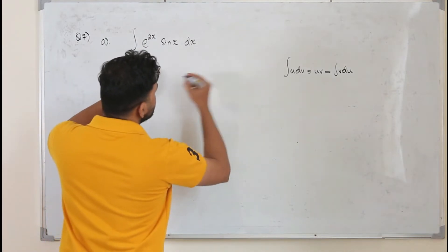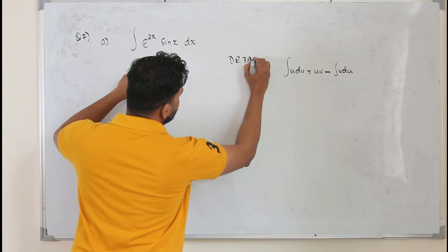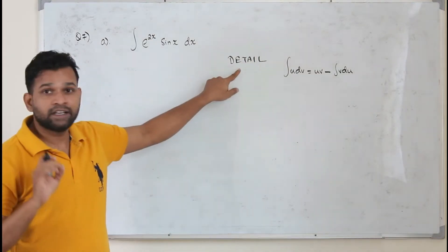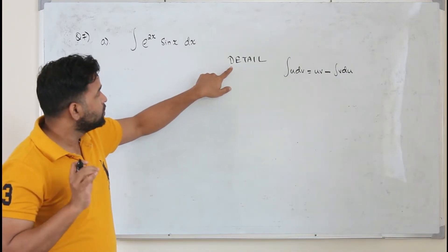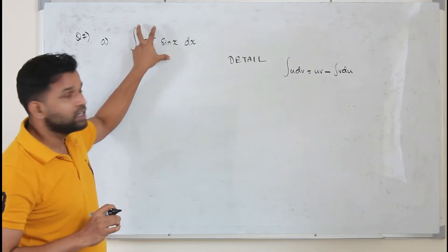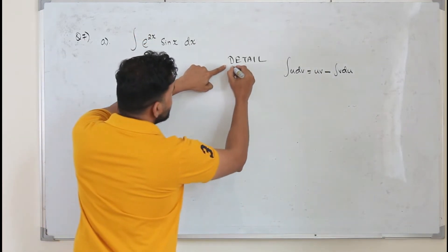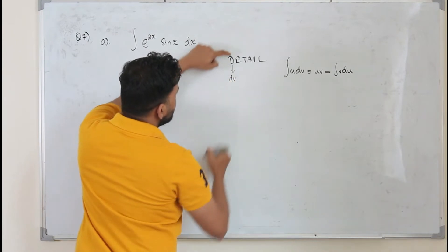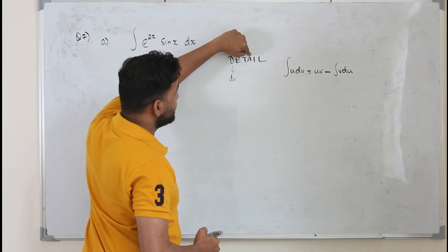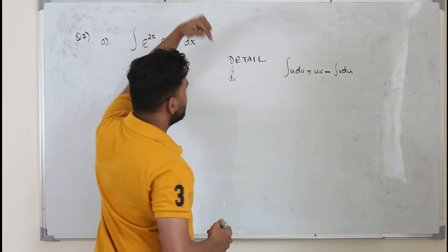We are going to use the abbreviation DETAIL to decide which function is dV. If you have learned integration by parts, you will know about this. DETAIL stands for: D is dV, E is exponential function, T is trigonometric function, A is algebraic function, I is inverse trigonometric, L is logarithmic function.